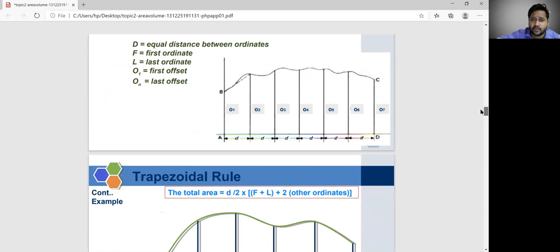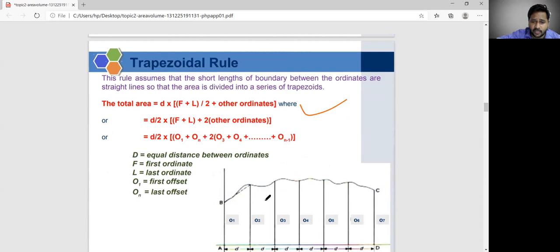See, this one is O_1, will be the first ordinate, last ordinate seventh ordinate last, plus O_7 by 2, plus remaining ordinates. You can use this formula. If you have more ordinates, O_1 plus O_n by 2 plus 2 into O_2, O_3, you can use any one of the formula for calculating by using trapezoidal rule.